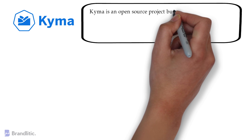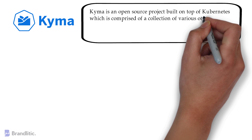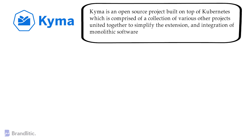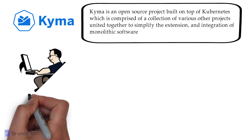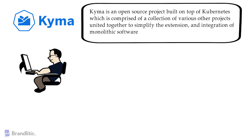But hey, what is Kyma and how does it relate to this? Kyma is an open source project built on top of Kubernetes, comprised of a collection of various other projects united together to simplify the extension and integration of monolithic software. All of these investigations, learnings, and frustrations of what project to use and how to integrate them have been performed, along with ongoing maintenance and improvements, providing you the opportunity to quickly connect and extend applications. The project was started by SAP but has been donated to the open source community.